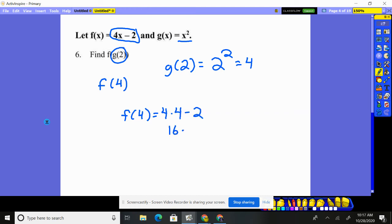And so now four times four is 16, take away two. Our final answer is 14 for number six.